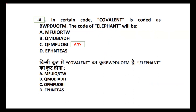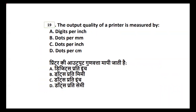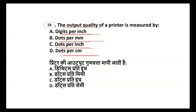Question nineteen: the output quality of a printer is measured by — digits per minute, dots per mm, dots per inch, or dots per cm? The quality of a printer is always stated with dots per inch (DPI).